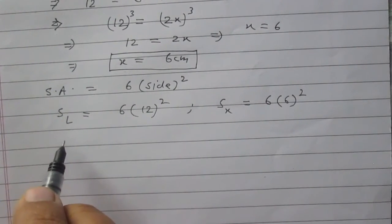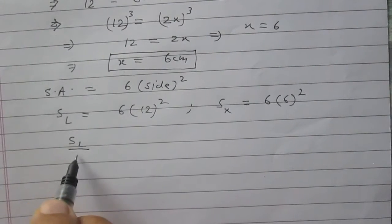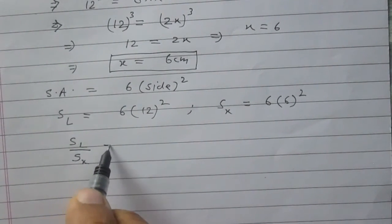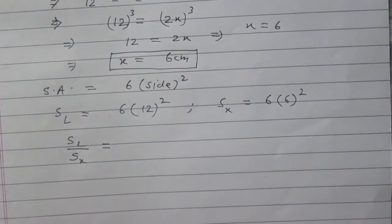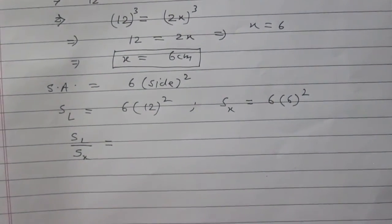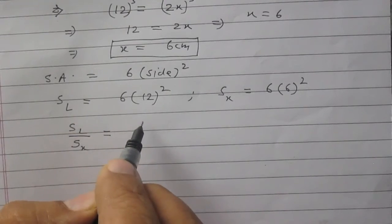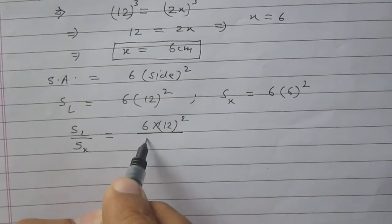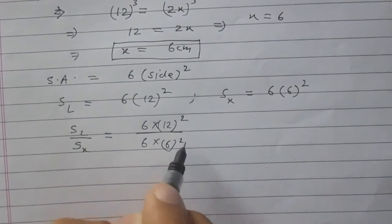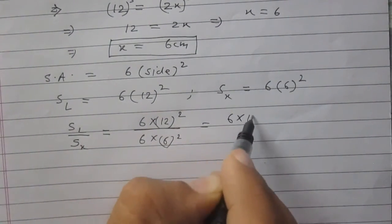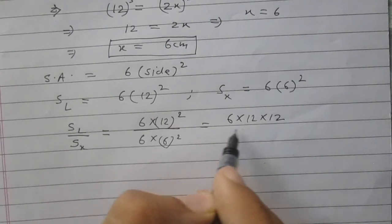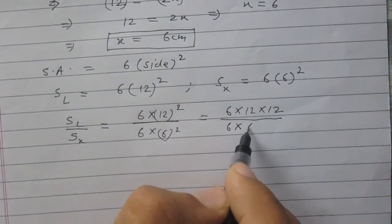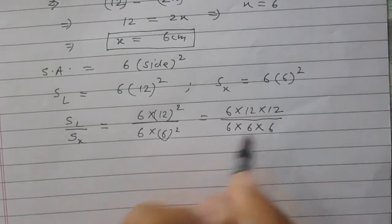If we want to find the ratio, we will divide SL by SX. The surface area of the larger cube upon surface area of the smaller cube. It is 6 times 12 square upon 6 times of 6 square. It is 6 multiplied by 12 multiplied by 12. And in the denominator, it is 6 multiplied by 6 multiplied by 6.